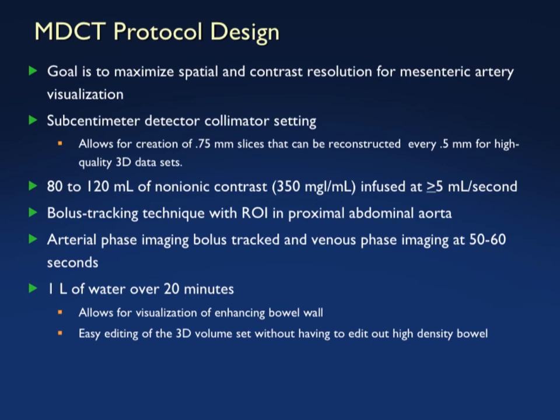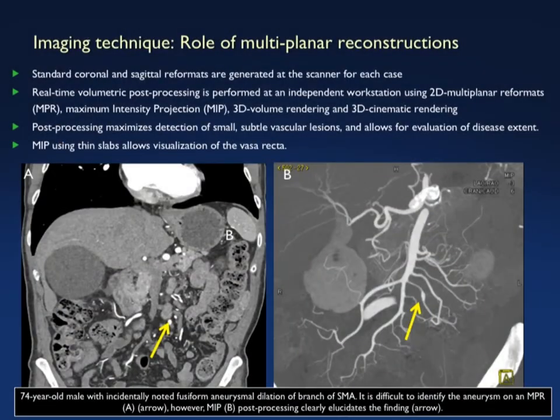I also like to use PO contrast. We use water to distend the stomach in all of our cases because it gets rid of many pseudo lesions, and also in a case like looking at SMA syndrome it helps to distend the bowel. Remember that with SMA syndrome, you can have a narrowed SMA angle that is concerning, but unless the duodenum is dilated there's no SMA syndrome. Technique becomes very important.